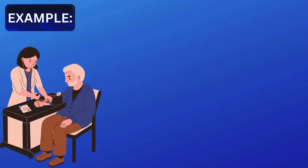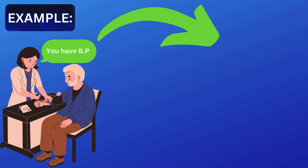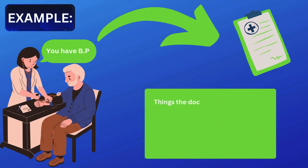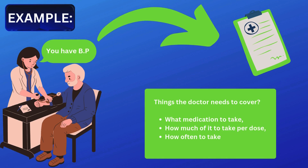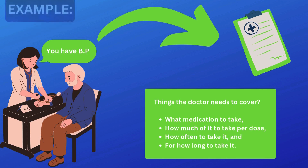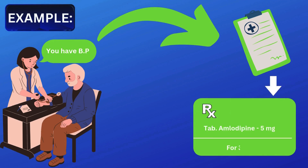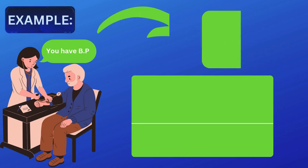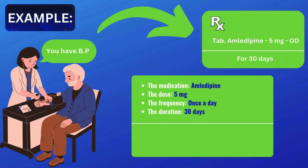Let's summarize with a different example. A patient comes to the hospital and is diagnosed with hypertension. The doctor has to design a dosage regimen, covering: what medication to take, how much per dose, how often, and for how long. The doctor prescribes tablet amlodipine 5mg once a day for 30 days. Breaking it down: the medication is amlodipine, the dose is 5mg, the frequency is once a day, and the duration is 30 days. This is the dosage regimen for the patient's hypertension treatment.